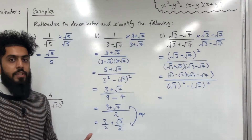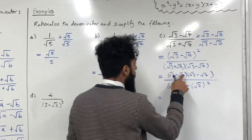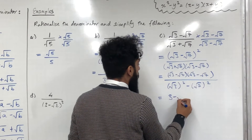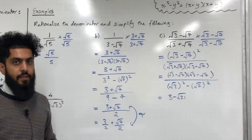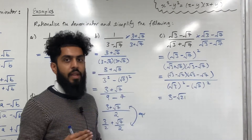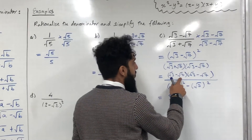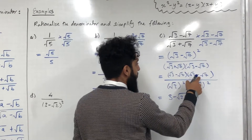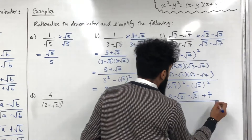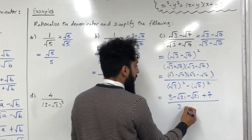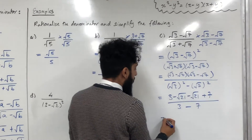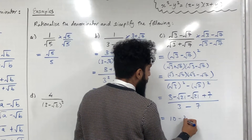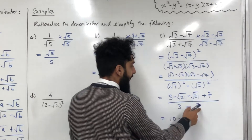Expanding the numerator: √3 × √3 = 3; √3 × (−√7) = −√21; (−√7) × √3 = −√21; (−√7) × (−√7) = +7. Combining: 3 + 7 = 10, and −√21 − √21 = −2√21. The denominator is (√3)² − (√7)² = 3 − 7 = −4. So we have (10 − 2√21) over −4.